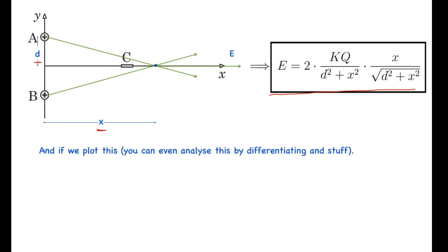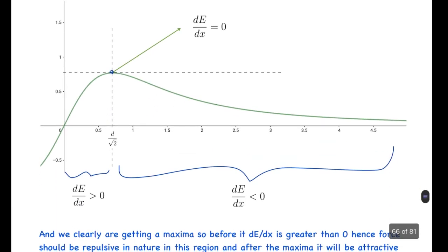And if we plot this, you can even analyze this function by differentiating. Basically we get a plot something like this: the electric field increases to some extent, then it reaches a maximum, and then it starts decreasing.